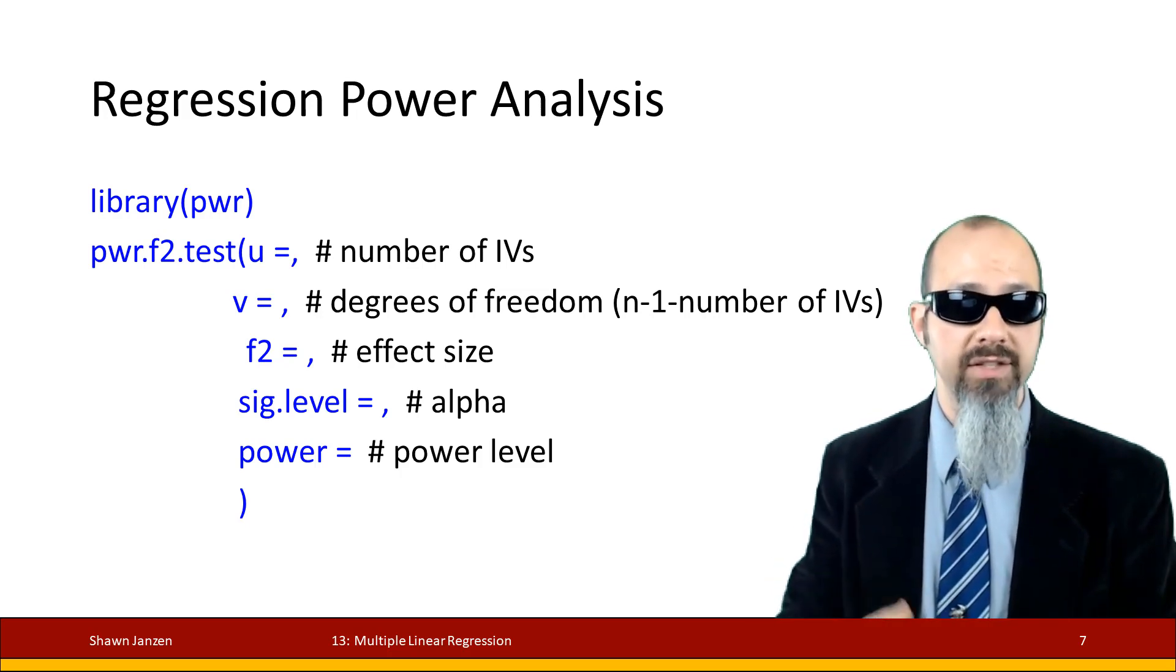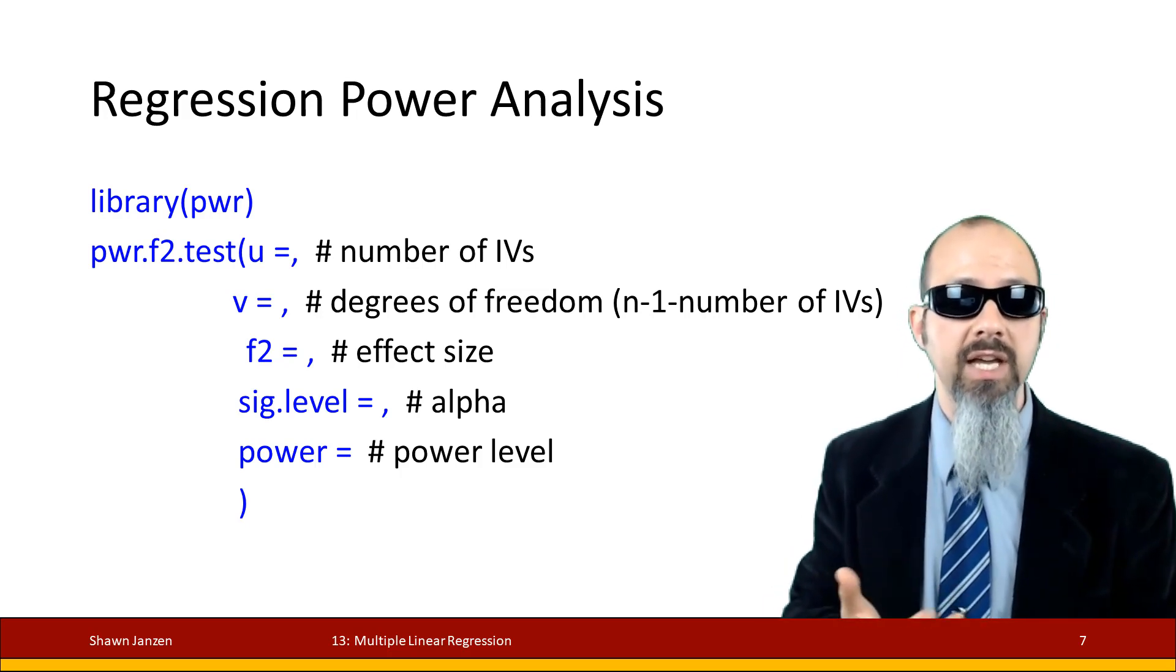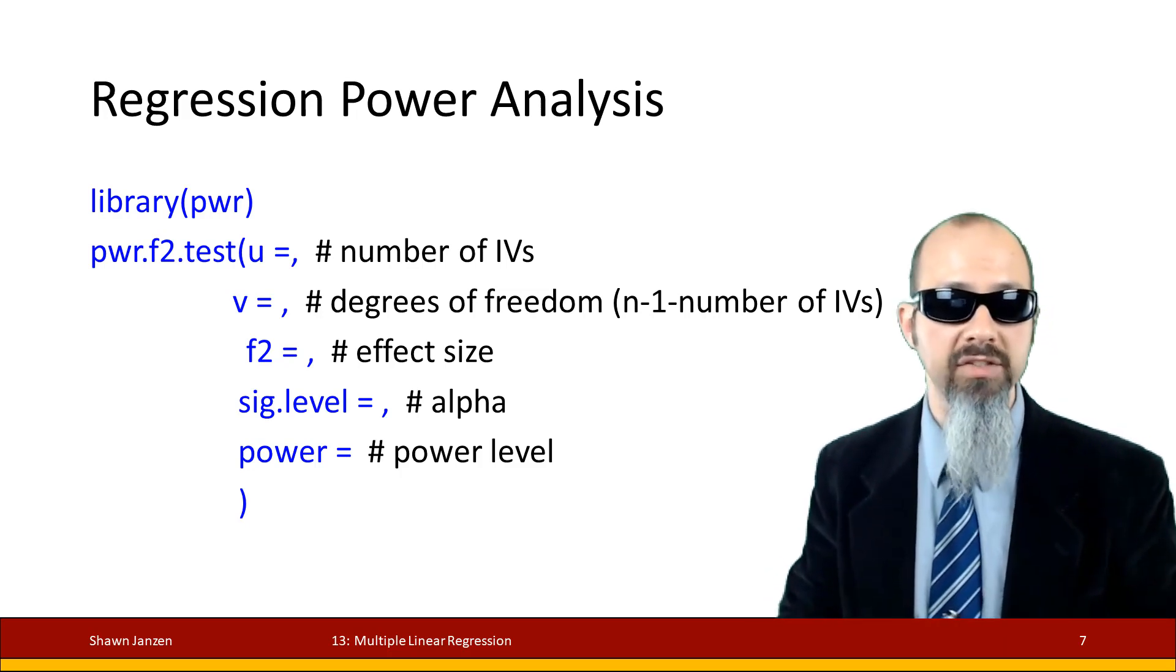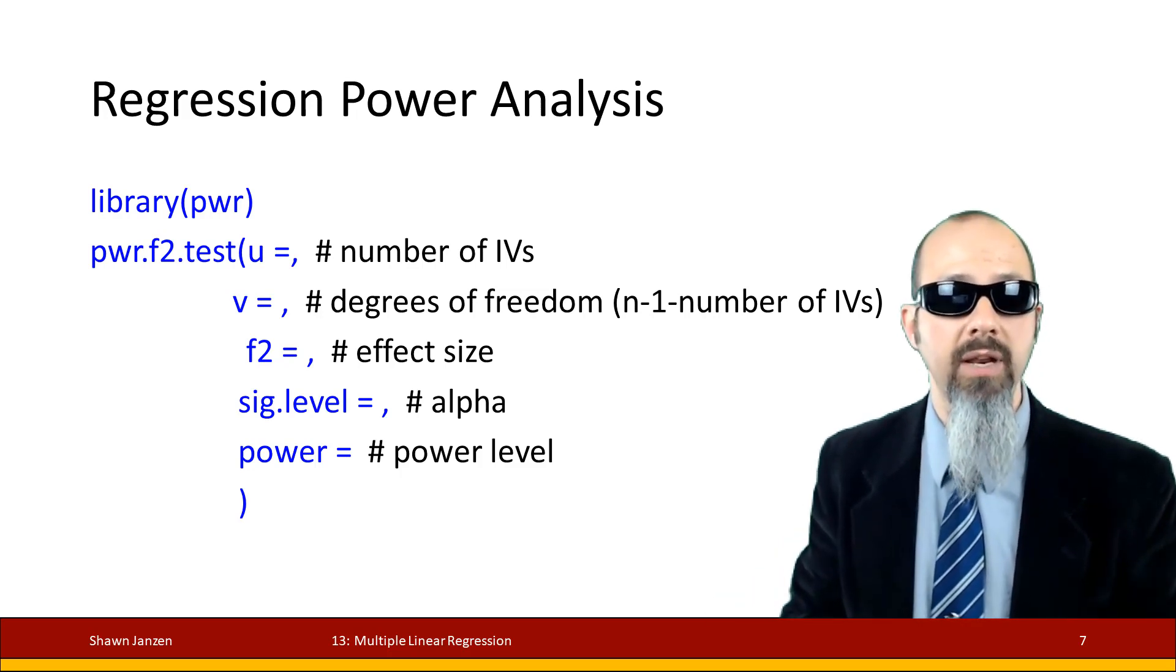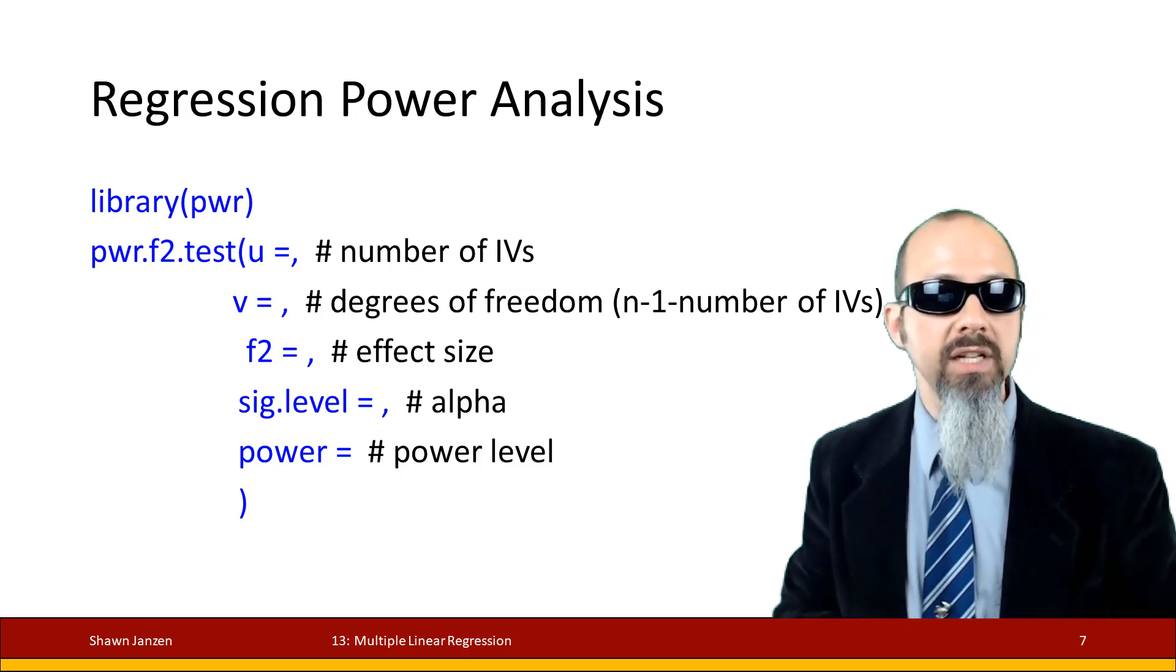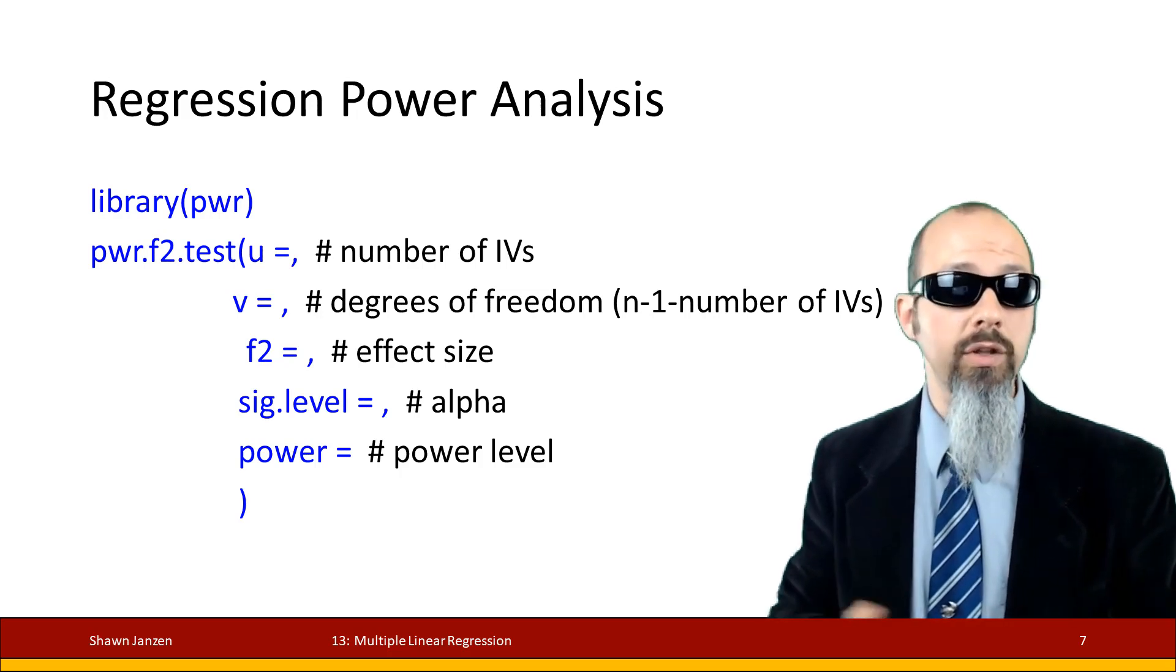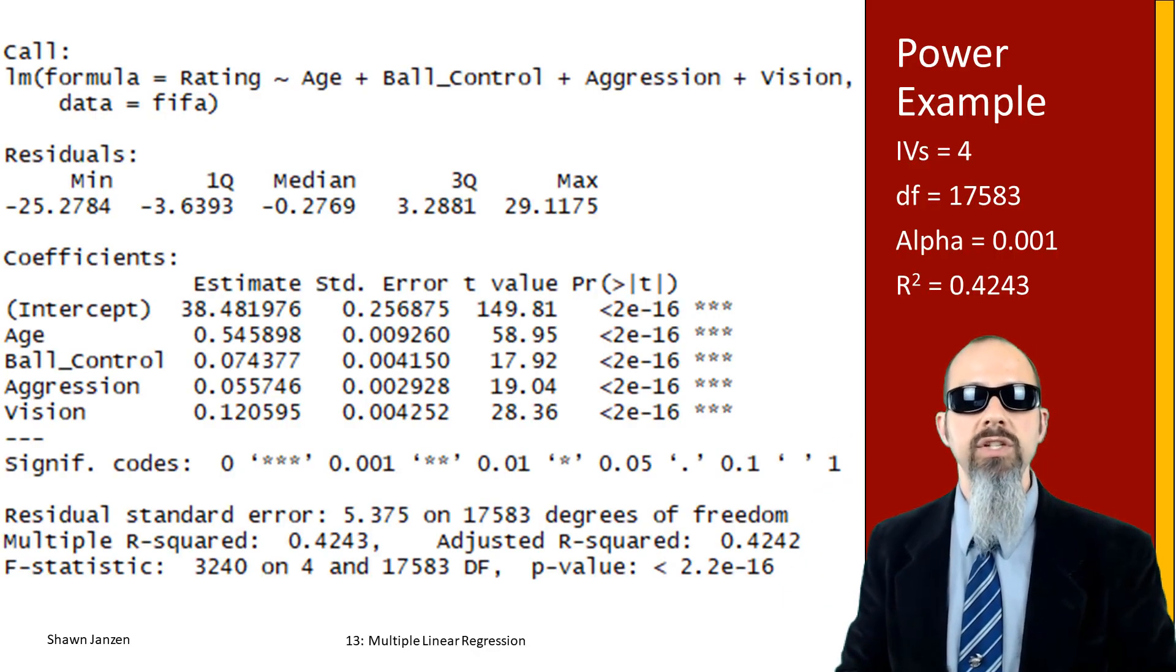The five arguments are: the number of independent variables as u; v equals the degrees of freedom (you can get this from your R output or calculate it by hand as n minus 1 for your model and minus 1 for every independent variable); f2, the effect size value we just calculated; your sig level, which is your alpha level; and the power, the desired power you want to find in your analysis.